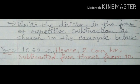In this part, the first question is: write the division in the form of repetitive subtraction as shown in the example below. We have to show the division form as repetitive subtraction. An example is given here. 10 divided by 2 is equal to 5. Hence, 2 can be subtracted 5 times from 10. This means we can subtract 2 from 10 five times and get the answer.